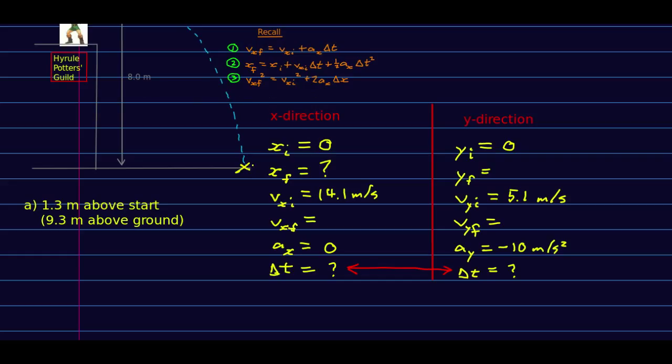Remember, these equations, the UAM equations, only know about uniformly accelerated motion. As long as this pot is flying through the air, it has this g downward acceleration. At the moment it hits the ground, everything changes. Suddenly it has a very different acceleration—it's brought rapidly to rest or maybe it bounces. In any case, the acceleration changes.